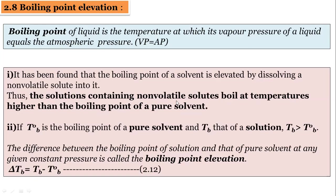Let me give one example. If we take water — the boiling point of water is 100°C. Water boils at 100°C, meaning at that point the vapor pressure of water equals atmospheric pressure. If a non-volatile solute is added to water — say some sand particles or dust particles — what will happen? Its boiling point will increase. Pure water boils at 100°C, but when mud or sand particles are added, its boiling point will increase to perhaps 105°C or 110°C, depending upon the non-volatile solute added.